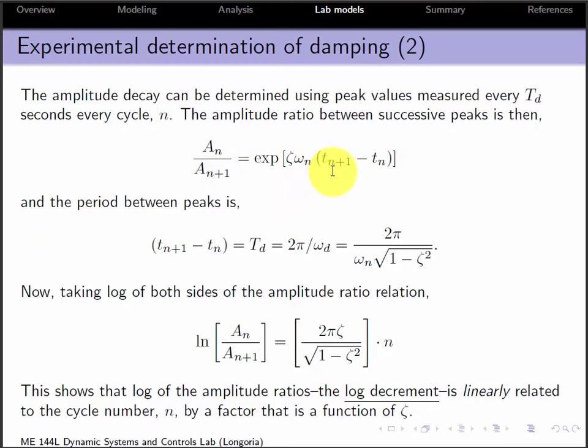So the period between those peaks, this difference here, turns out to be the damped natural period. And remember, that's related to the damped natural frequency, which is this expression here: ωₙ times the square root of one minus ζ squared. So see, it depends on ζ.